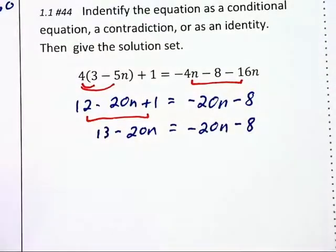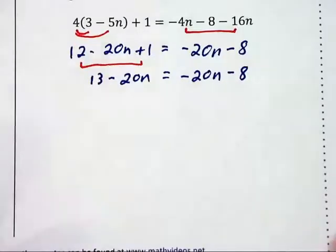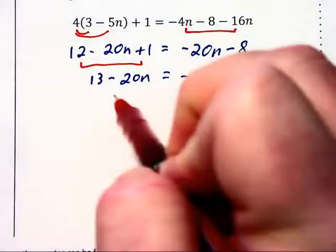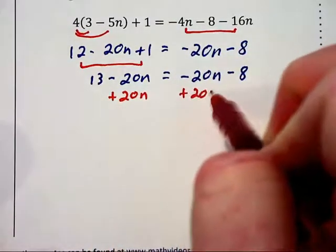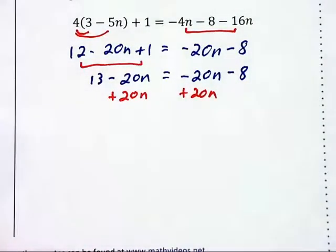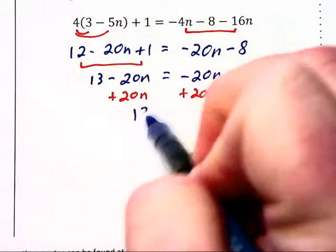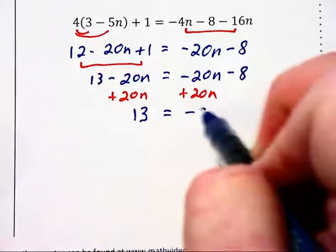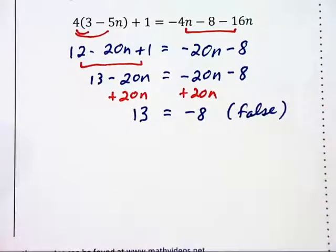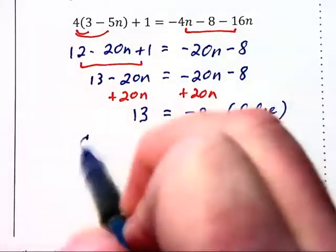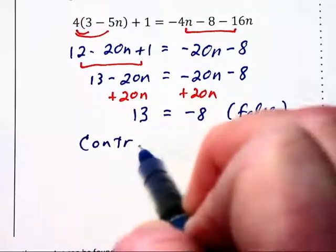And since we have negative 20n's on each side, let's add 20n to each side. The n's disappear from the equation altogether, and we have left 13 equals negative 8. This is a false statement. Therefore, this equation contains a contradiction.